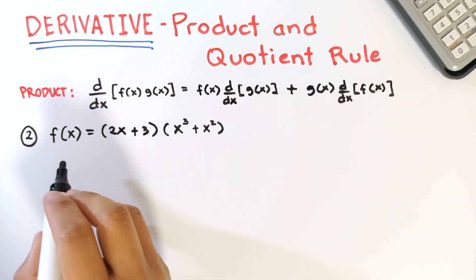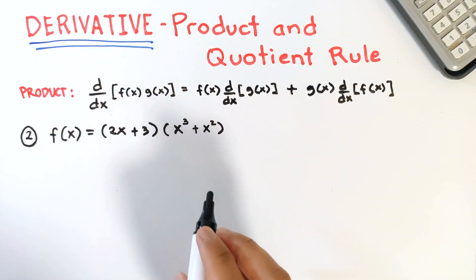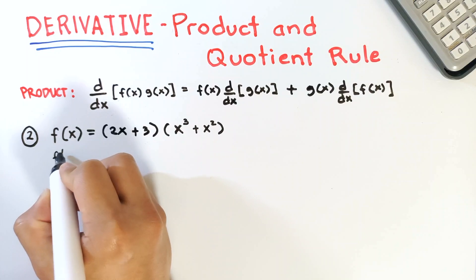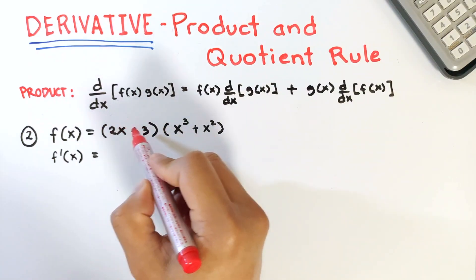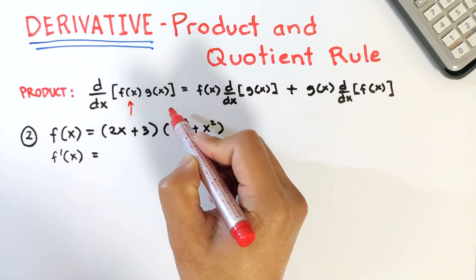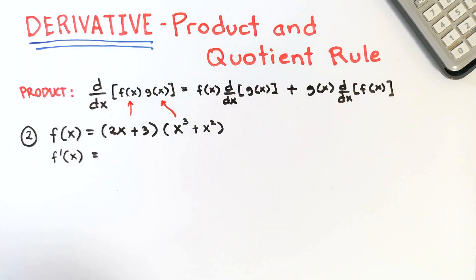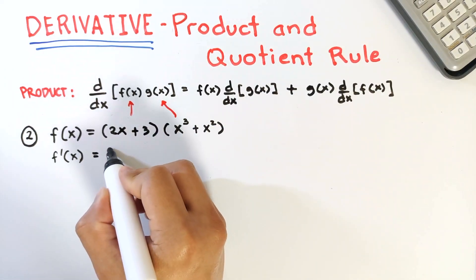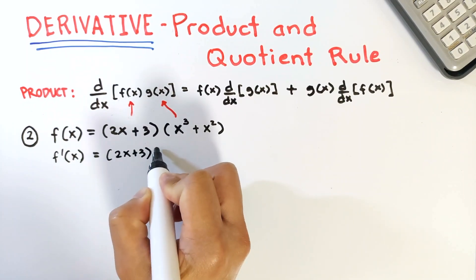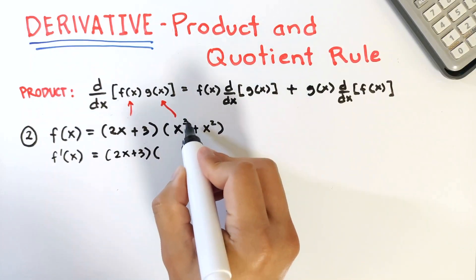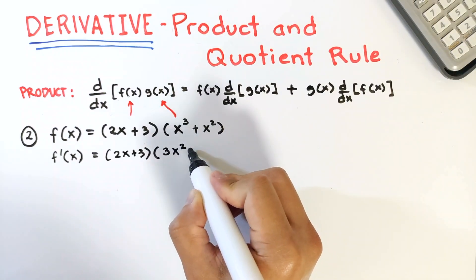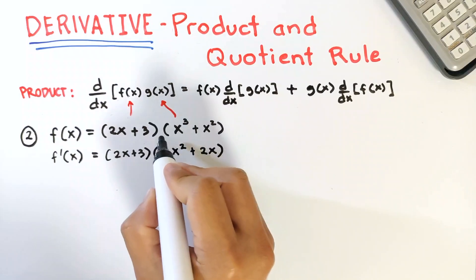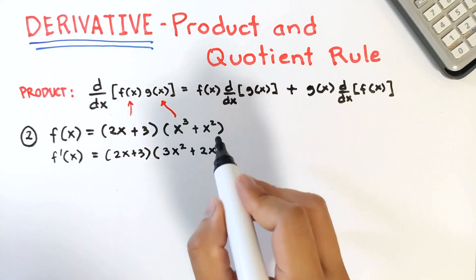For example 2, we have f of x equals (2x plus 3) times (x cubed plus x squared). The derivative: f is 2x plus 3 and g is x cubed plus x squared. Following the formula, copy f which is 2x plus 3, then differentiate g — the derivative of x cubed is 3x squared and the derivative of x squared is 2x, using the power rule.